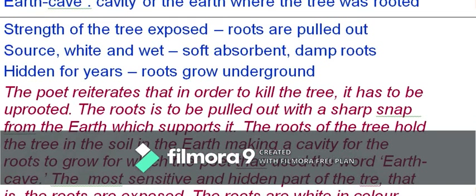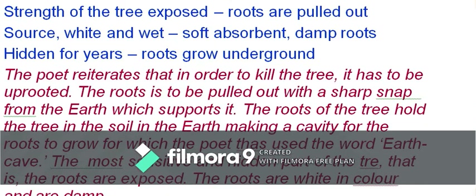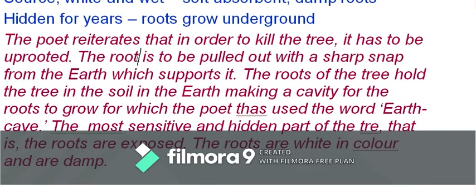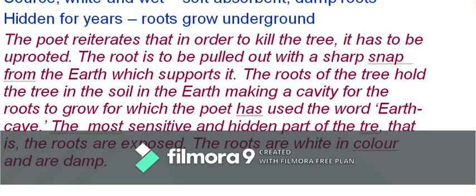The poet reiterates that in order to kill a tree, it has to be uprooted. The root must be pulled out with a sharp snap from the earth which supports it. The roots hold the tree in the soil, creating a cavity for which the poet uses the word 'earth cave.' The most sensitive and hidden part of the tree — the roots — are exposed; they are white in color and damp.